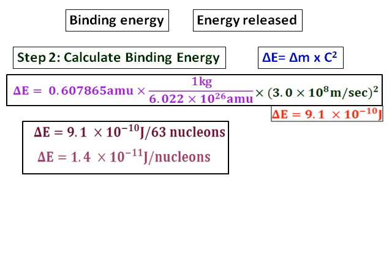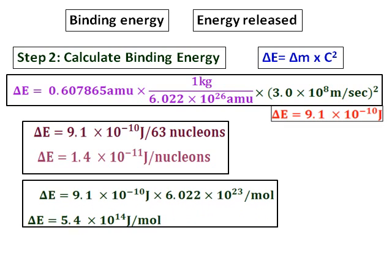Sometimes they can ask you the binding energy per mole. When such a question is asked, multiply the energy you got by the Avogadro number 6.022 × 10²³, that will give the binding energy per mole.